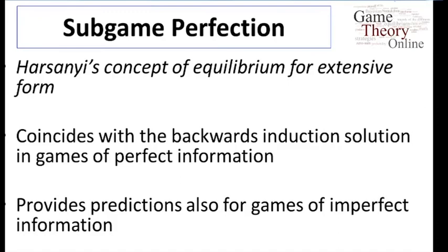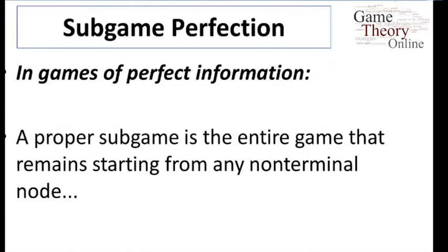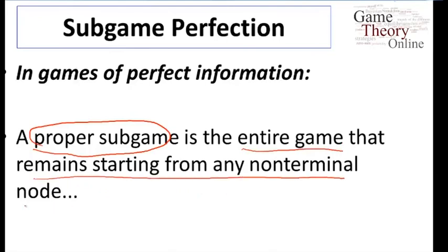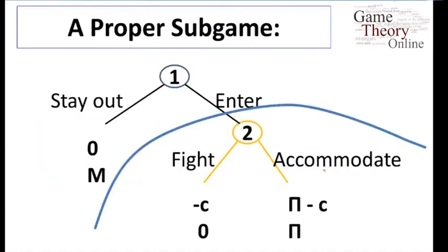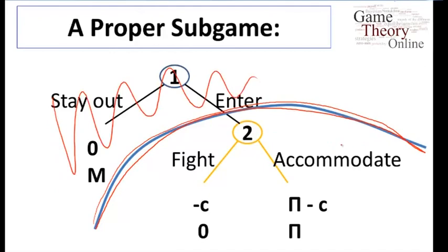First we have to define what it means to talk about sub-games — what's a sub-game? In games of perfect information, a proper sub-game is the entire game remaining starting from any non-terminal node. So we look at a node that's not a terminal node, and if we start a game from that point onwards, we have what's called a sub-game. Looking at the entry game example, we could start at the node where player two is making a decision of fight or accommodate. If we cut the game off at that point, what remains — ignoring the first choice of player one — is a proper sub-game that looks like a game in its entirety.